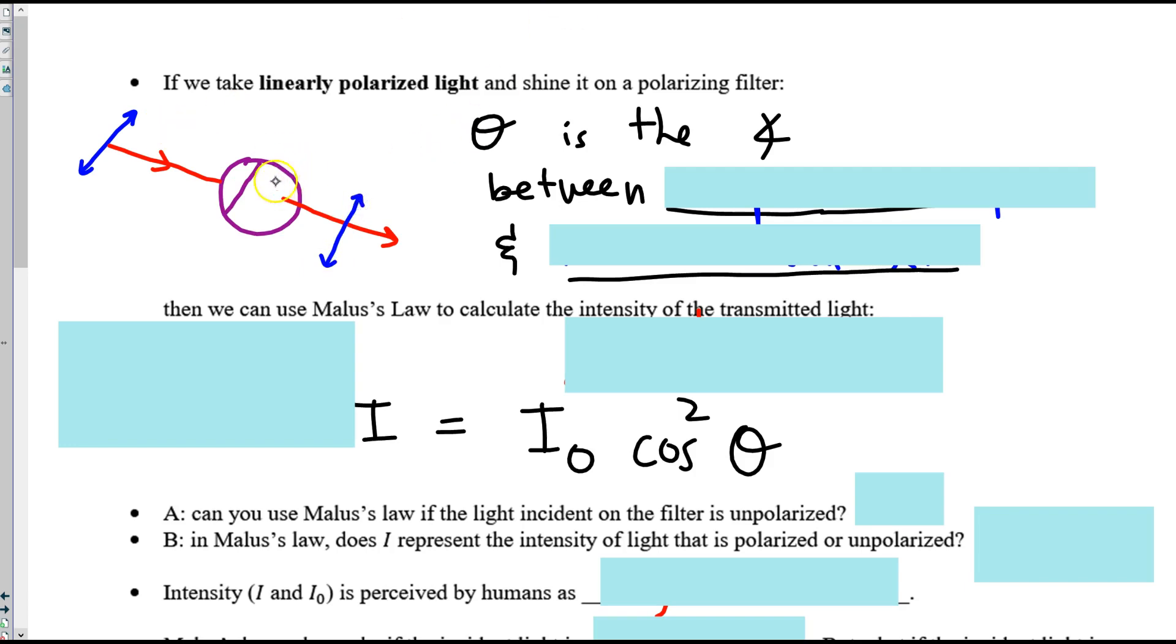So before we reach the filter, the oscillations in the electric field are something like this. And then on the other side of the filter, we have all of those oscillations making it through. So we have this wave shape that looks like what we've seen before.